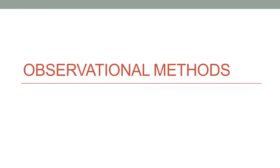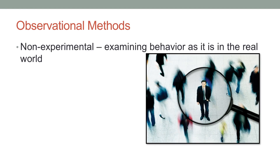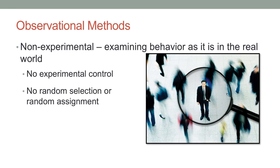In this series of lecture videos, we're going to be talking about observational methods. This is a type of non-experimental method, and in this one we're going to be examining behavior as it happens in the real world. So with this kind of technique, there's no control over what happens to participants, at least not with the kind of in-depth control you get with an actual experiment. And there's also no random selection or random assignment.